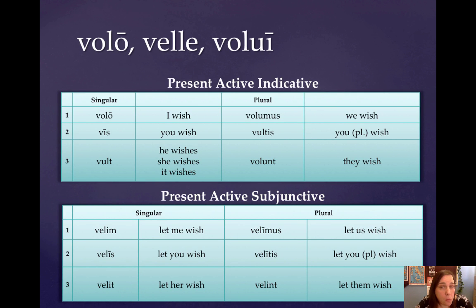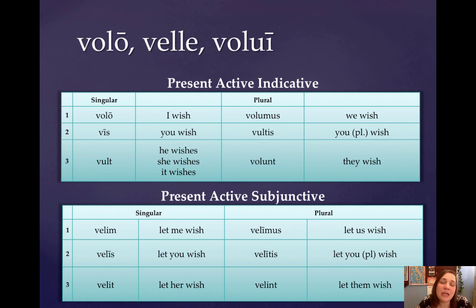So volo is volo, velle, volui. What essentially has happened here is that the second principal part would be velere, which was just awkward for the Romans to say, so it became a somewhat abbreviated form, which was just velle. To form the imperfect subjunctive is going to be velle plus the personal endings.